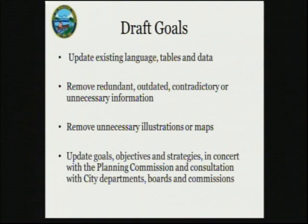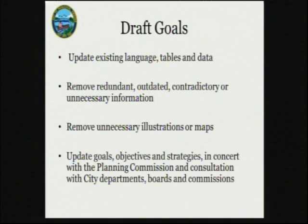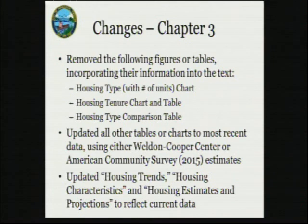Changes for chapter 3 were a bit more substantial than for the previous demographics chapter. We began by removing several figures and tables and trying to incorporate their information into the text — specifically the housing type table, housing tenure chart, housing tenure table, and housing type comparison table. Those were removed and incorporated back into the text. All other tables and charts have been kept and updated to the most recent data using either Weldon Cooper Center or American Community Survey estimates from 2015.